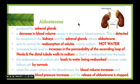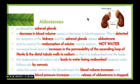The second hormone we need to look at is aldosterone. Aldosterone is produced by the adrenal glands — two little glands that sit on top of the kidneys, like kidney hats. A decrease in blood volume causes a decrease in blood pressure, which is detected by receptors in the kidney, and then the adrenal glands release aldosterone. Aldosterone acts to control the reabsorption of solutes, in particular sodium — not actually the water. ADH handles reabsorption of water; aldosterone handles reabsorption of sodium.